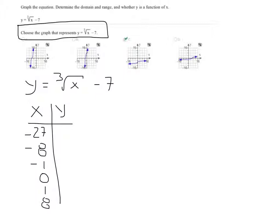So if we plug in negative 27, I'd have the cubic root of negative 27 minus 7. The cubic root of negative 27 is a negative 3, because if I take negative 3 and multiply it by itself, negative 3 times negative 3 is 9, 9 times negative 3 is negative 27, I'll get a negative 10. So when I plug a negative 27 in, I get a negative 10 out.